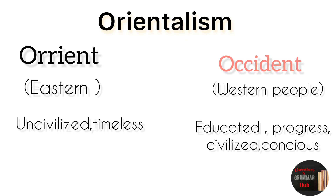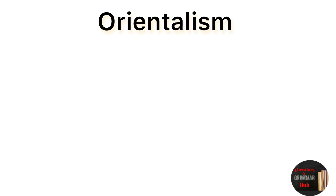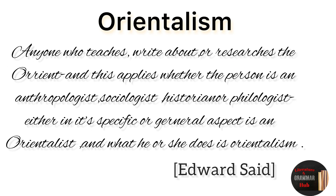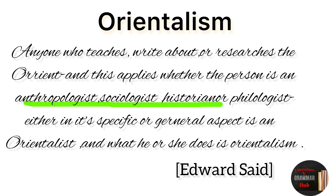Edward Said makes one important point in his book Orientalism: according to the Occident, anyone who teaches, writes, or learns about Orientalism is called an Orientalist. Whether he is an anthropologist, a historian, or whatever he is, what he writes about the Orient makes him an Orientalist. This is all Western thought related to Eastern people.